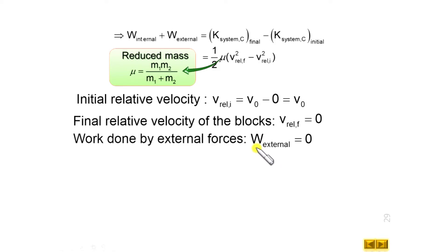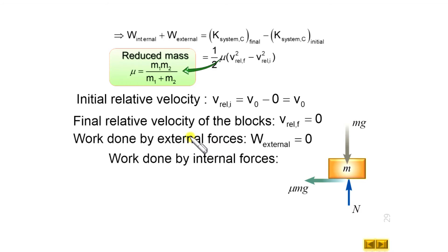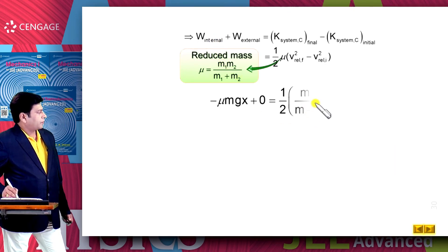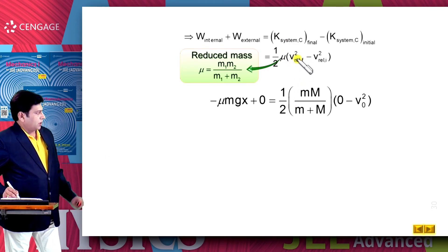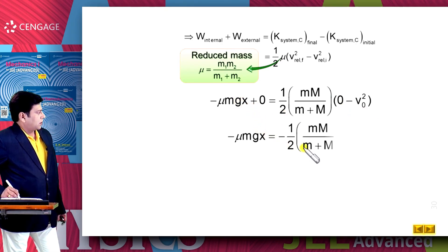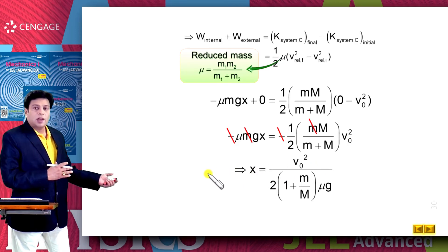There is one internal force — the kinetic friction. From the free body diagram: weight acts downward, normal force upward equal to mg, and friction force μmg in the backward direction. So the kinetic friction force equals μmg and the relative sliding distance is x. The work done by kinetic friction equals minus μmgx. Substituting this internal work into the equation along with the initial and final velocities, after rearranging and cancelling terms, x equals the relative separation between the block and trolley.